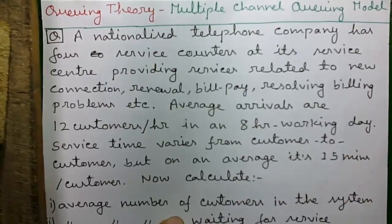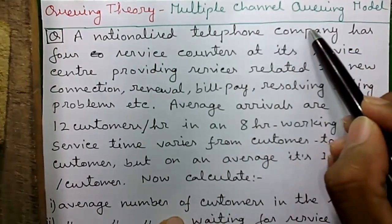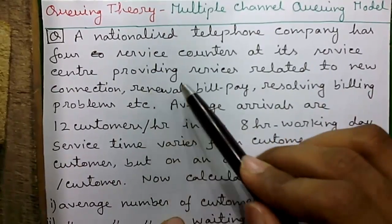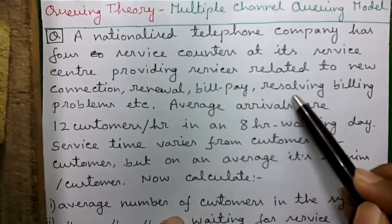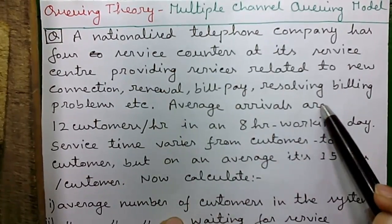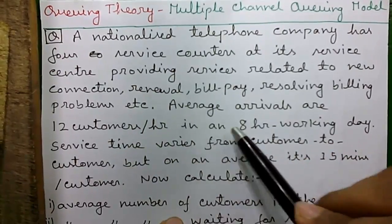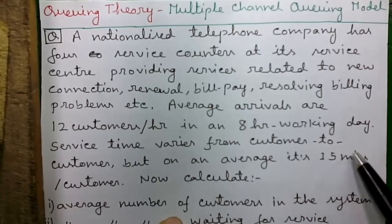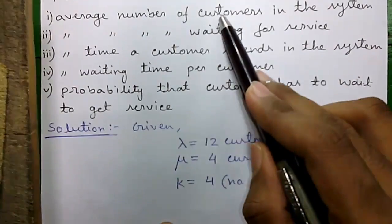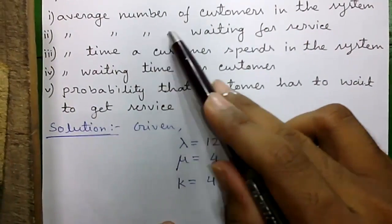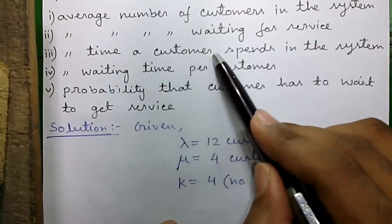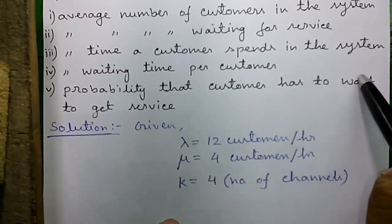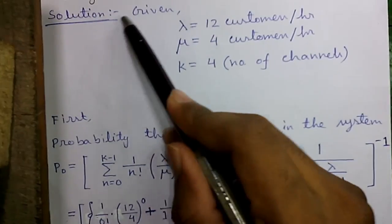Our question: a nationalized telephone company has four service counters at its service center providing services related to new connection, renewal of connection, bill paying, resolving billing problems, etc. The average arrivals are 12 customers per hour in an 8-hour working day. The service time varies but on average is 15 minutes per customer. Calculate: average number of customers in the system, average number waiting for service, average time a customer spends in the system, average waiting time per customer, and the probability that a customer has to wait.